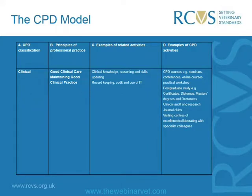On screen you'll see a table with four columns: A - CPD classification, B - principles of professional practice, C - examples of related activities, and D - examples of CPD activities. We split this into three domains, starting with clinical.